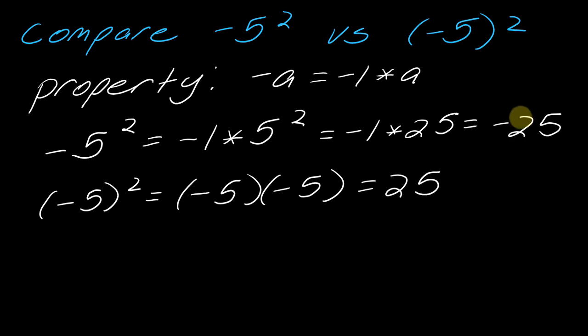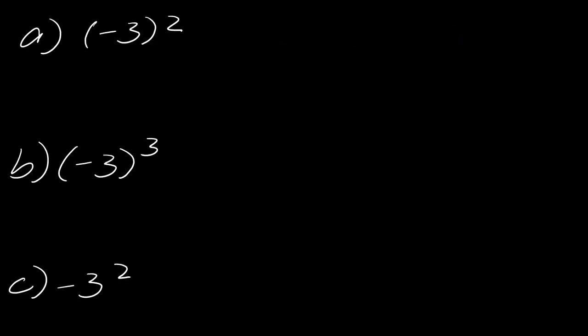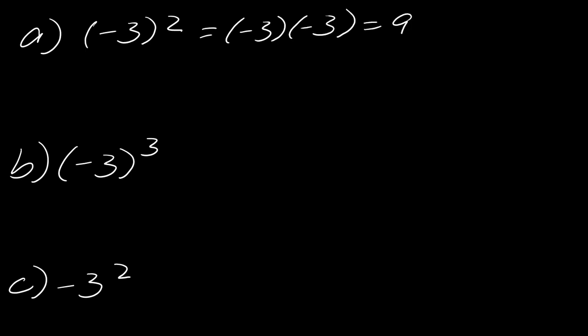So you've got negative 25 versus positive 25 — that is kind of a big difference. Now let's think about this in a couple of different problems. For example A, I've got negative 3 in parentheses, squared. This is going to be that case where this equals negative 3 times negative 3. A negative times a negative is positive, so that will be positive 9.